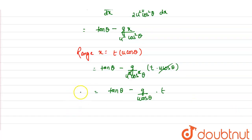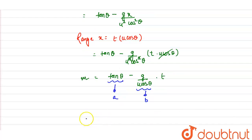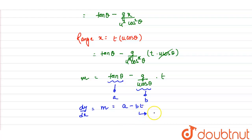So we get the slope m = tanθ − [g/(u·cosθ)]·t. In this equation, tanθ is a constant (let's call it a) and g/(u·cosθ) is another constant (let's call it b). This represents a straight line equation: m = a − b·t, which is a straight line with negative slope and a positive intercept on the m-axis.